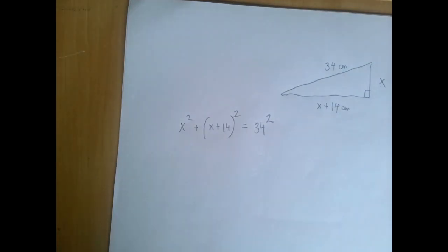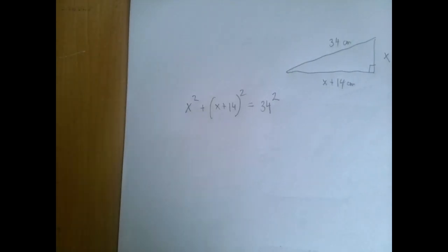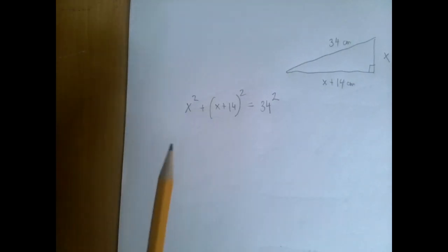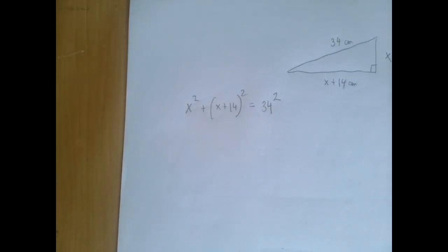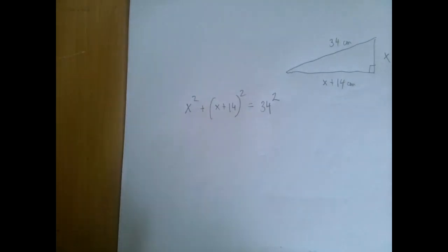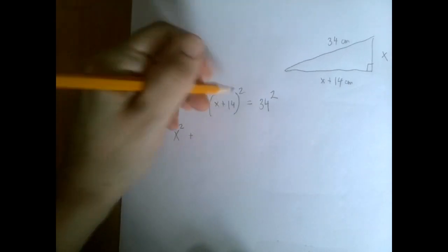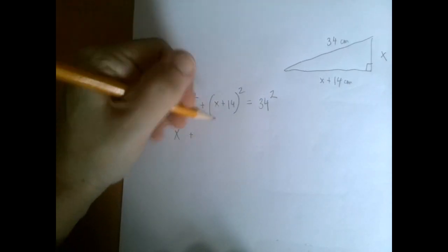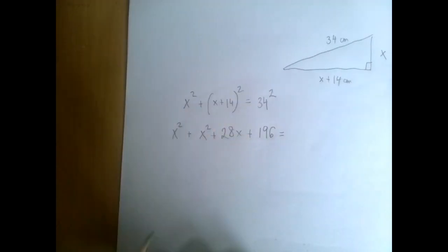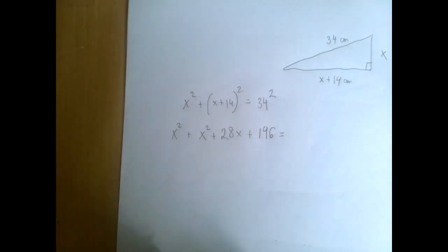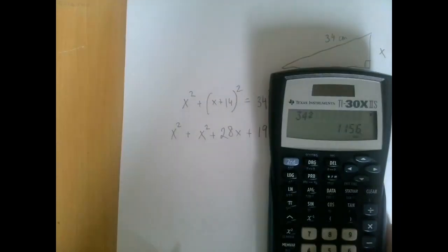That is going to be a quadratic equation — even after the algebra, there's going to be 2x squared here. We FOIL out the complete square: x squared plus (x plus 14)(x plus 14) is x squared plus 14x plus 14x — that's 28x — plus 14 squared, which is 196. That equals 1156.